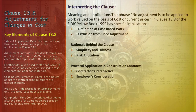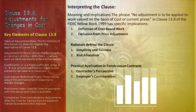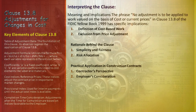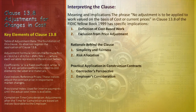Let's break down the key elements of Clause 13.8. The Table of Adjustment Data is the backbone of the clause — it details how contract prices should be adjusted. If this table is missing, Clause 13.8 cannot be applied. The clause uses a specific adjustment formula: PN = A + B(LN/L0) + C(EN/E0) + D(MN/M0), where PN is the adjusted price and each variable corresponds to different cost factors, ensuring a comprehensive approach to adjustments.